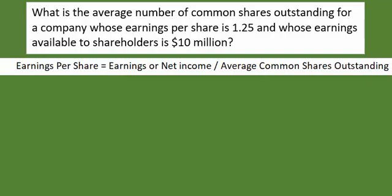Let's tackle the question you see on the screen. What is the average number of common shares outstanding for a company whose earnings per share is $1.25 and whose earnings available to shareholders is $10 million?